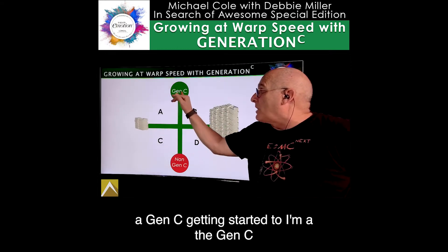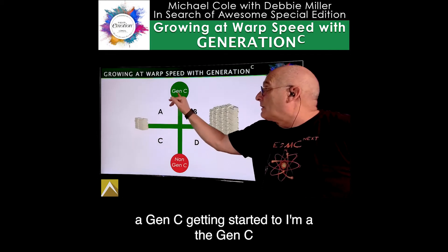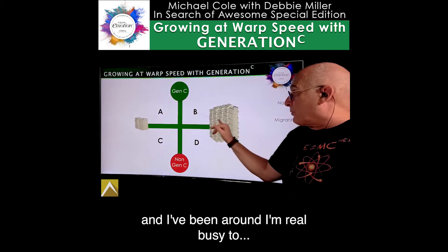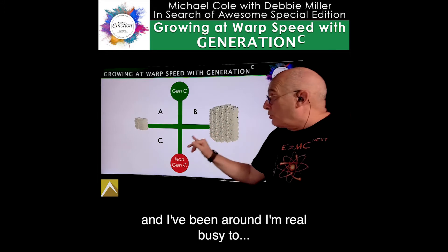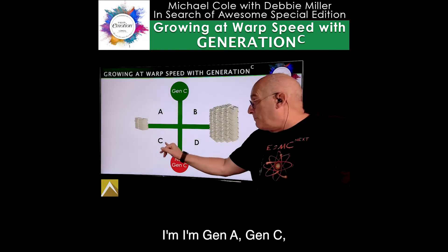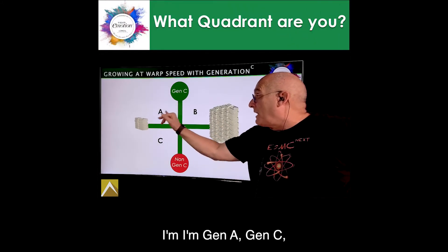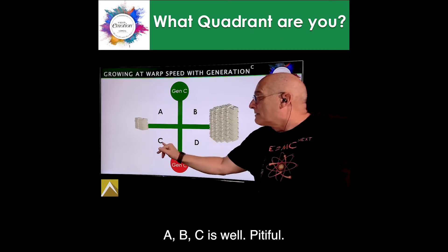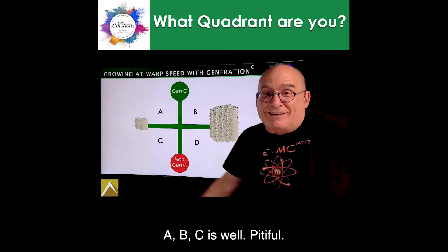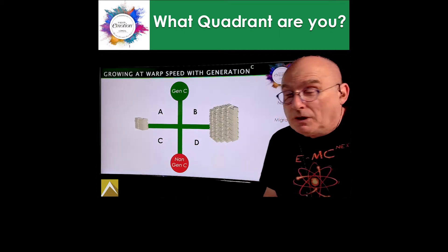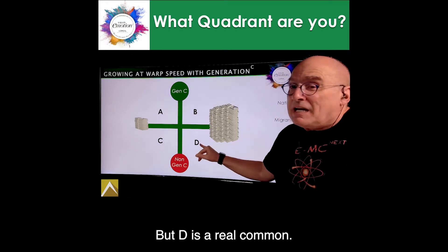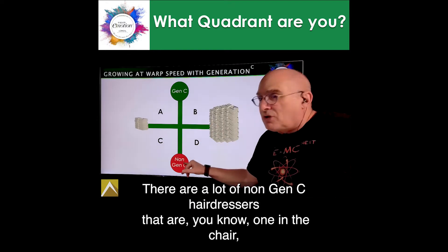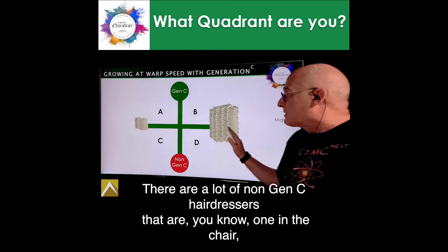Quadrant A is: I'm a Gen C getting started. Quadrant B is: I'm a Gen C and I've been around and I'm really busy. Quadrant C is, well, pitiful, but Quadrant D is really common.